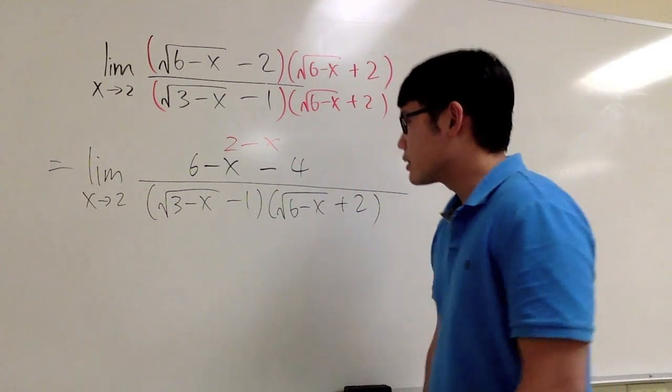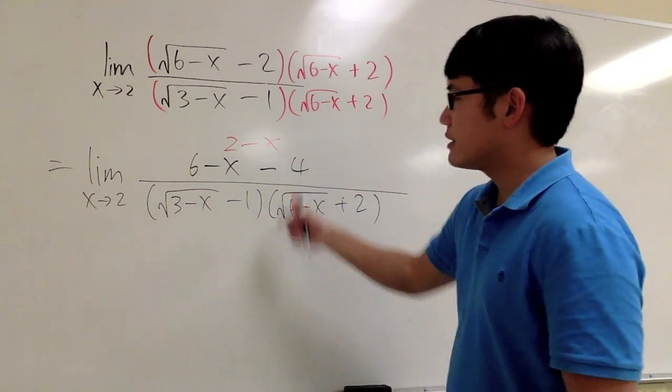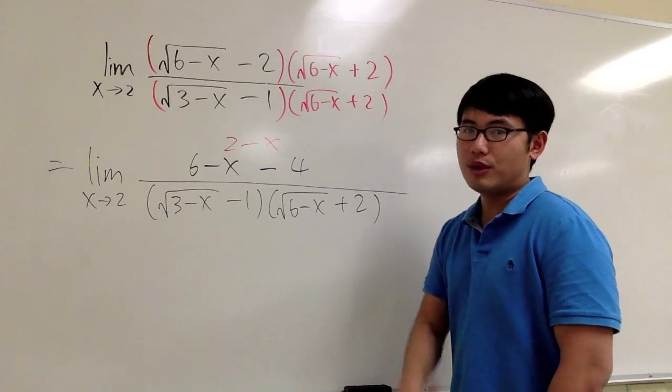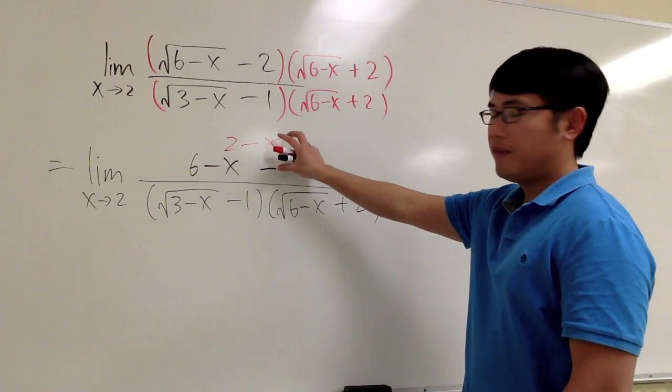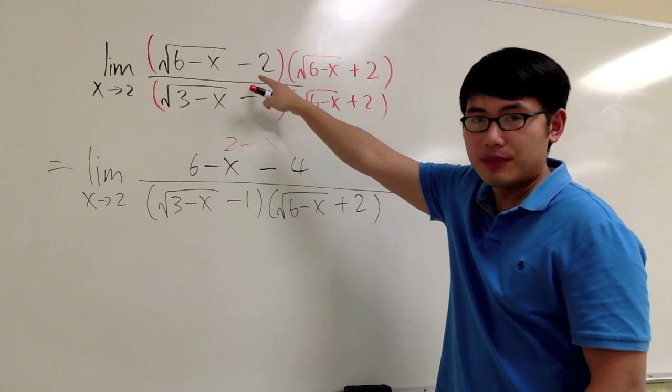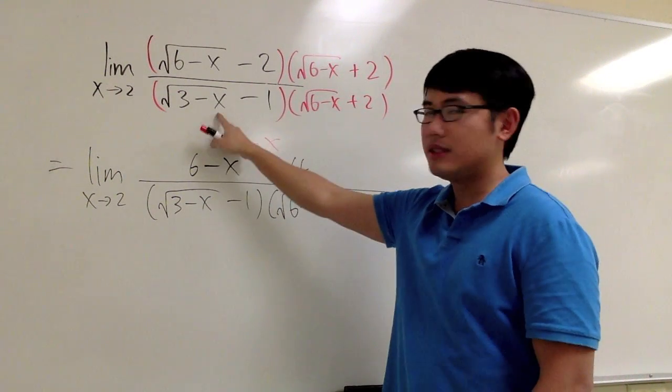And now let's take a look. If you plug in 2 into all the x, you are still going to get 0 over 0. Okay. We cannot fix that square root at the first place. We haven't done anything with this square root, right?